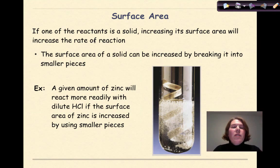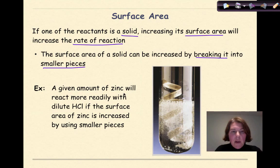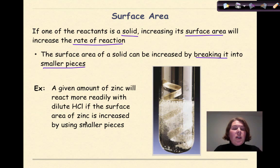Surface area. If one of the reactants is a solid, increasing its surface area will increase the rate of reaction. The surface area of a solid can be increased by breaking it into smaller pieces. For example, a given amount of zinc will react more readily with dilute hydrochloric acid if the surface area of the zinc is increased by using smaller pieces.